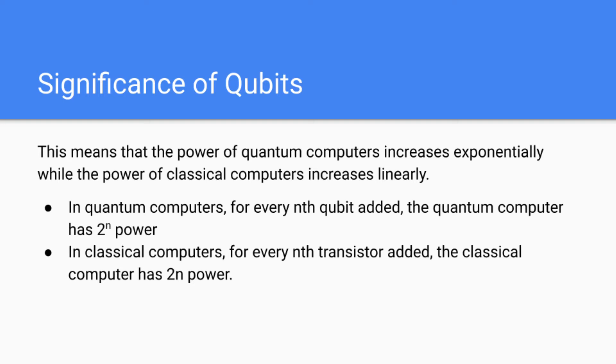So we can see here, in quantum computers, for every nth qubit added, the quantum computer has 2 to the n power. But in classical computers, for every nth transistor added or bit added, the classical computer has 2n power.